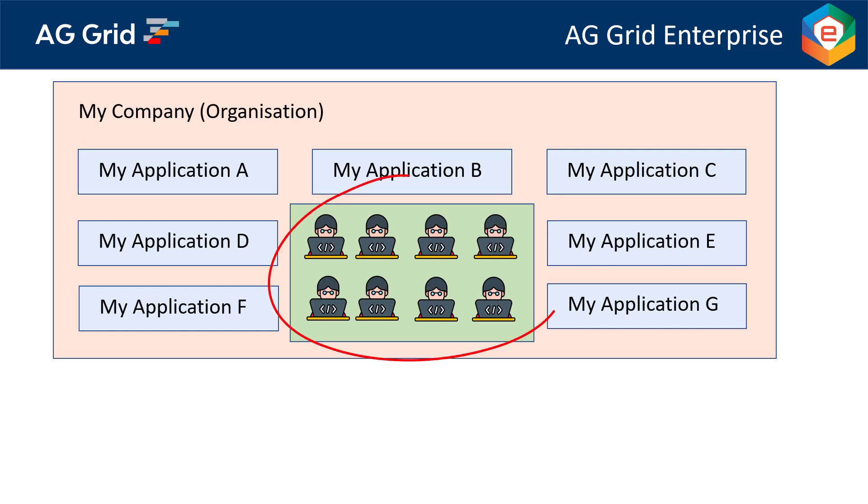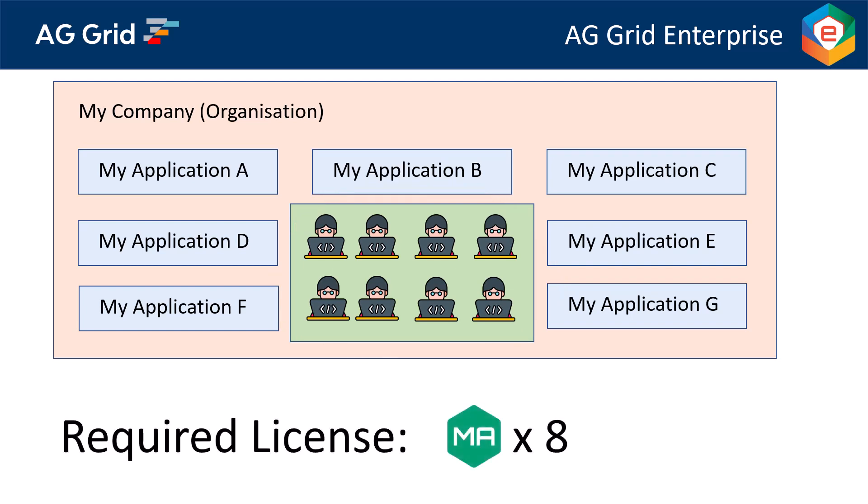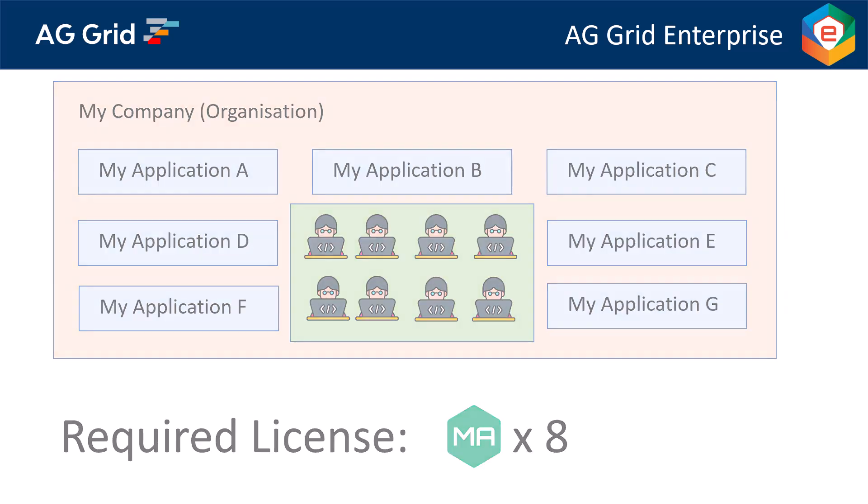In this example, we have pulled all our developers into one group. In total we have eight developers, so we need a multi-app license for eight developers. This becomes considerably cheaper if developers were working across projects, and it also makes licensing considerably easier to manage. Most large customers of AG Grid will use multi-app to license groups of developers. These multi-app licenses would typically be corporate-wide to license all developers in your company, or departmental-wide to license all developers within a particular department.